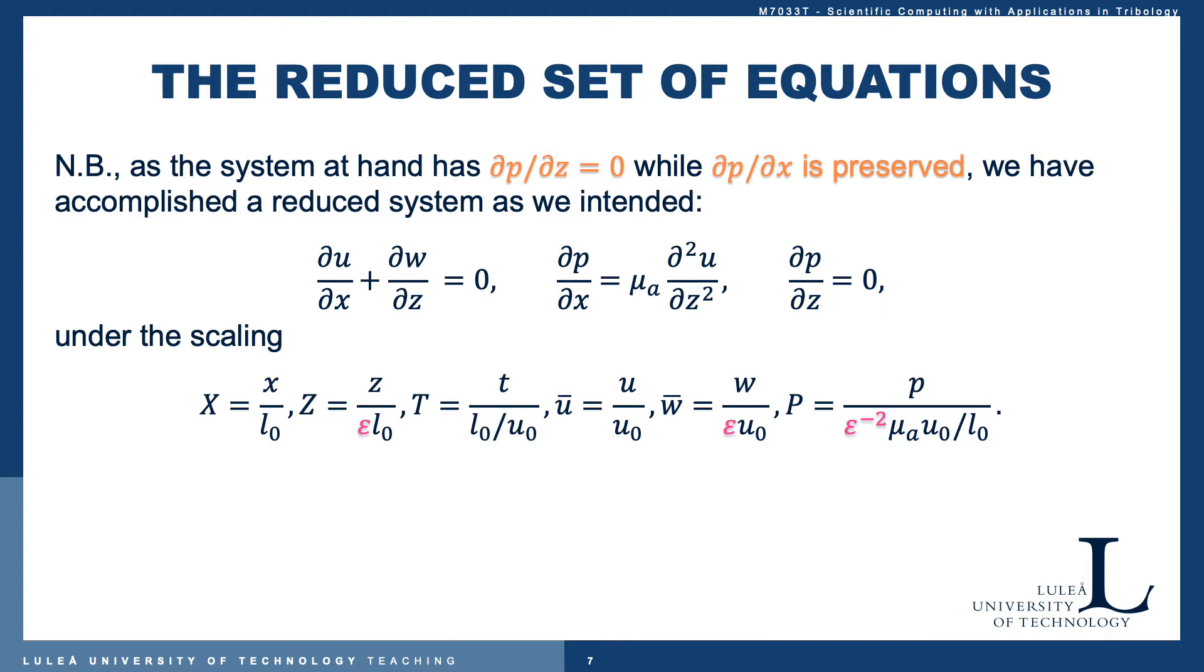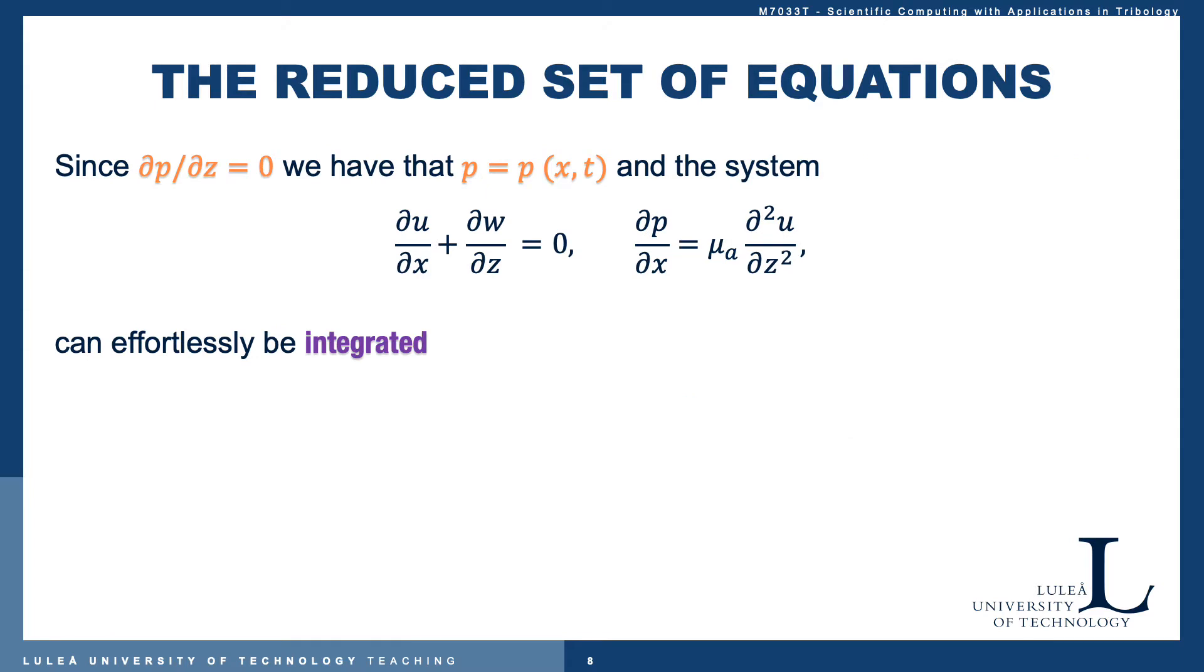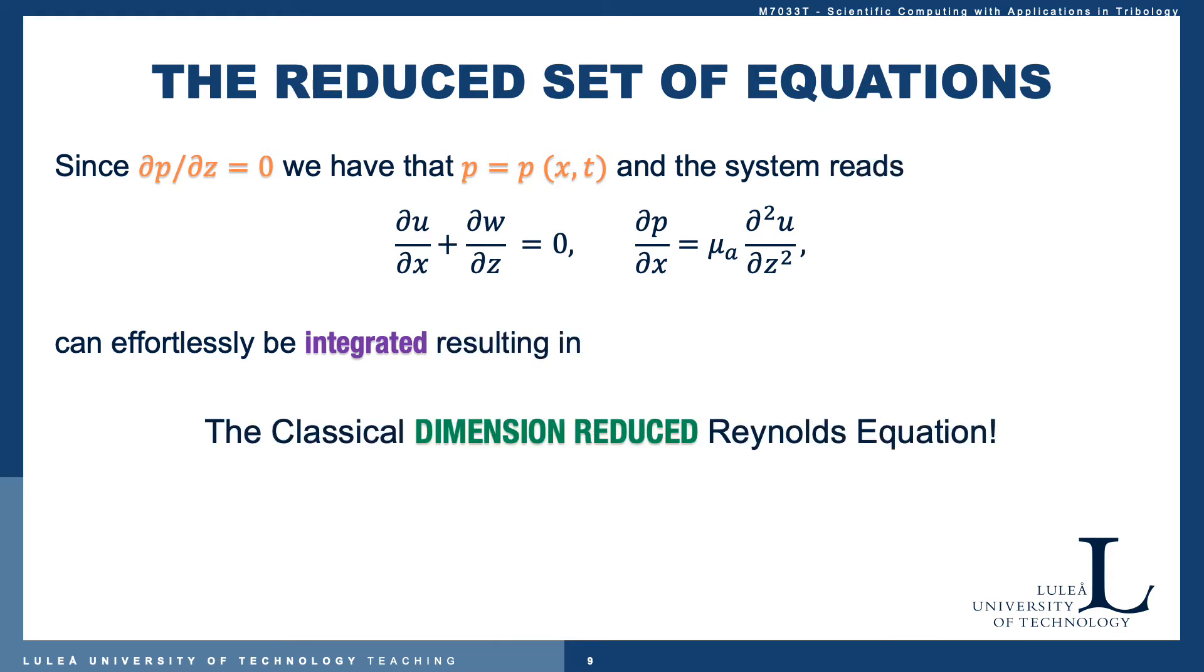In dimensional form we can present the system like this: the continuity equation which is the divergence of the velocity, the x momentum equation, and the z momentum equation under this scaling. Since ∂p/∂z is zero, we can exclude that from the equation and p is a function of x and t only. This means the system can be integrated, resulting in the classical dimension-reduced Reynolds equation.